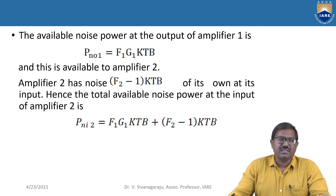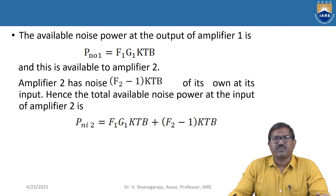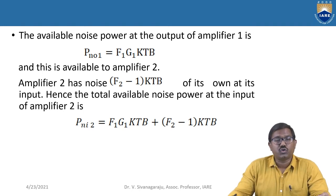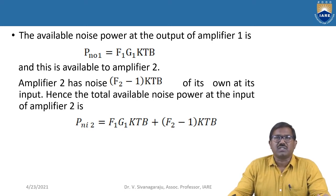The input noise power PNI is KTB, but the gain of amplifier 1 adds up, so PNO1 = F1 · G1 · KTB. This output is available to amplifier 2 as its input, since they are cascaded. Amplifier 2 also contributes its own noise, (F2 − 1) · KTB. Hence the total available noise power at the input of amplifier 2 is: PNI2 = F1 · G1 · KTB + (F2 − 1) · KTB.